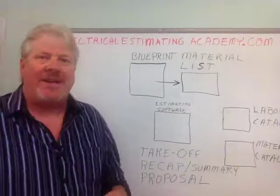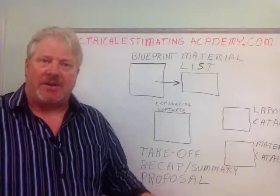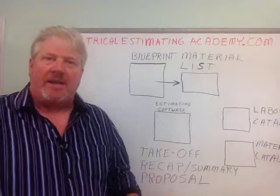If you're estimating residential, it'll probably be stuff like Romex, plastic boxes and devices. In commercial it might be conduit, Unistrut, all thread, different devices, plugs and switches and light fixtures.